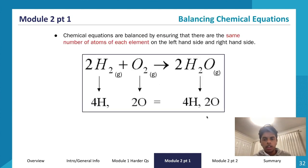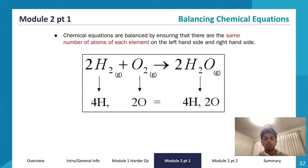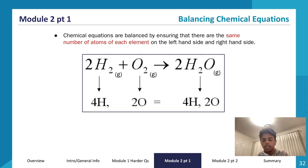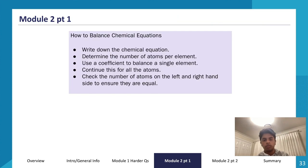Chemical equations are balanced by ensuring there are the same number of atoms of each element on the left-hand side and the right-hand side. If the same number of atoms are on each side, they'll have the same mass, which follows the law of conservation of mass. That's the fundamental principle of balancing chemical equations — you just need to make sure there are the same number of atoms on each side.